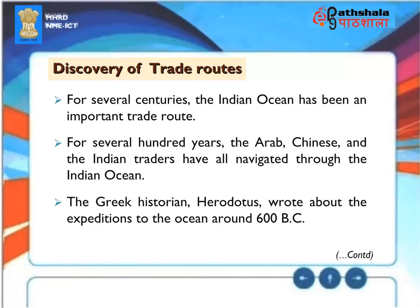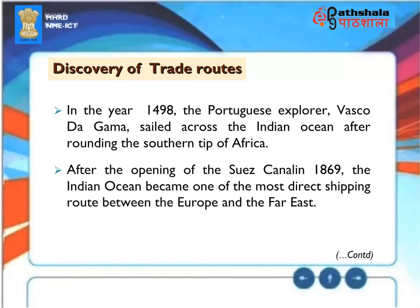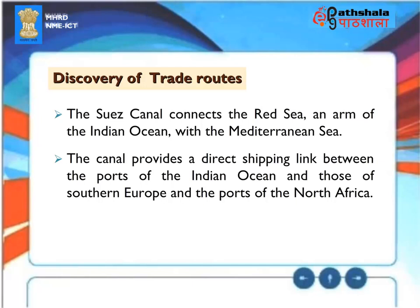Discovery of Trade Routes. For several centuries the Indian Ocean has been an important trade route. Arab, Chinese and Indian traders have all navigated through it. The Greek historian Herodotus wrote about expeditions to the ocean around 600 BC. In 1498, the Portuguese explorer Vasco da Gama sailed across the Indian Ocean after rounding the southern tip of Africa. After the opening of the Suez Canal in 1869, the Indian Ocean became one of the most direct shipping routes between Europe and the Far East. The Suez Canal connects the Red Sea with the Mediterranean Sea, linking ports of the Indian Ocean with southern Europe and North Africa.